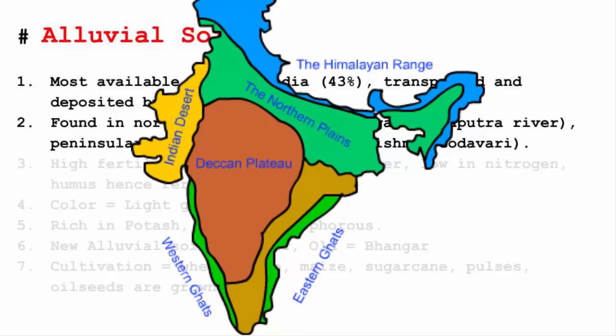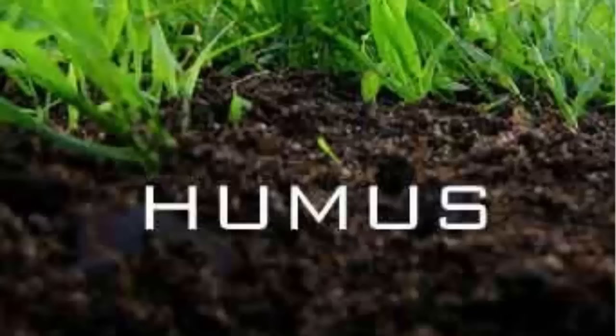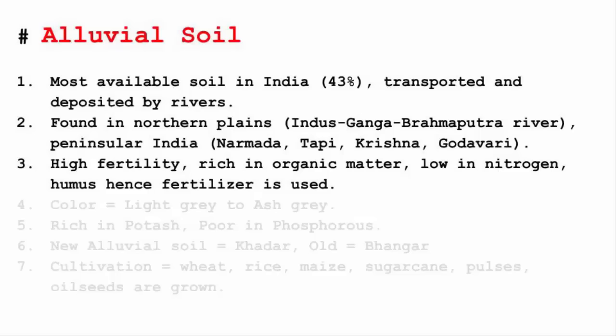Alluvial soil is highly fertile, meaning it is rich in organic matter. On the other hand it is low in nitrogen and humus. Humus refers to small microorganisms that live under the soil. Hence with the help of fertilizer, this soil becomes the perfect soil for growing plants. The color of this soil generally ranges from light gray to ash gray.